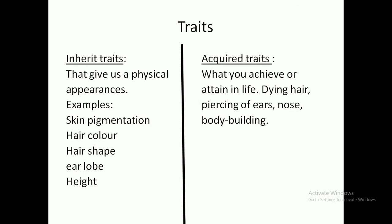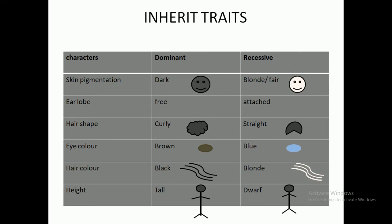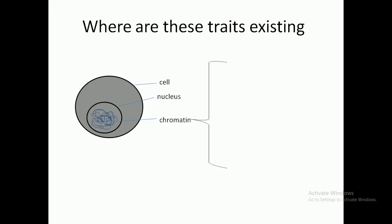Acquired traits are not coming from the genes of your parents — they are traits you attain by yourself. Here are some examples of inherited traits with dominant and recessive variants: skin pigmentation — dominant is dark, recessive is blonde or fair; earlobe — dominant is free form, recessive is attached; hair shape — dominant is curly, recessive is straight; eye color — dominant is brown, recessive is blue; hair color — dominant is black, recessive is blonde; height — dominant is tall.